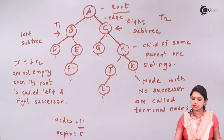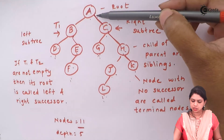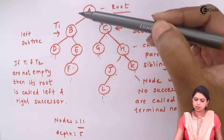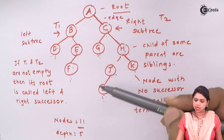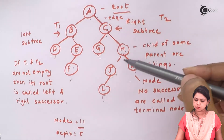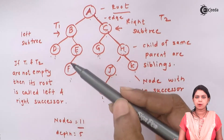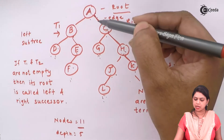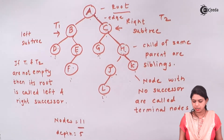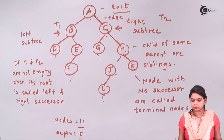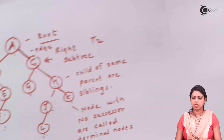The depth of a binary tree is the path that contains the maximum number of nodes. For example, the path A-C-H-K has four nodes, but the path A-C-H-J-L has five nodes. Checking all other paths, this is the longest path with five nodes, so the depth of this binary tree is five.